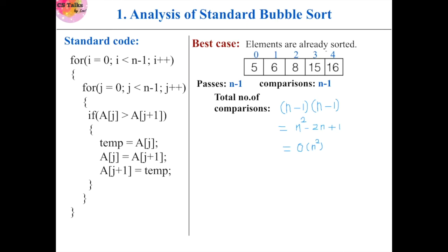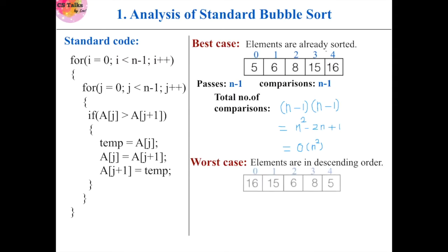The worst case occurs when the array elements are in descending order, meaning they are not in the correct order and we need to swap elements in each and every iteration. Again we do n-1 passes and n-1 comparisons per pass, so the total number of comparisons is (n-1) × (n-1) and the worst case is O(n²).